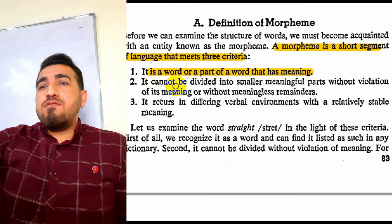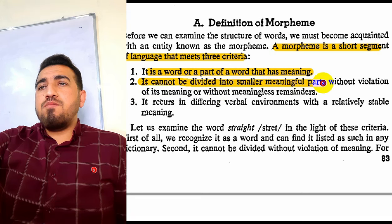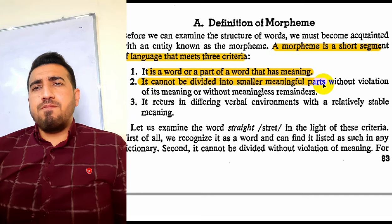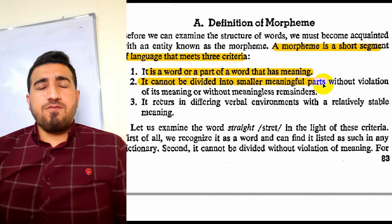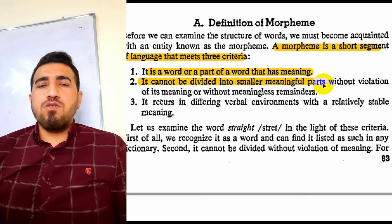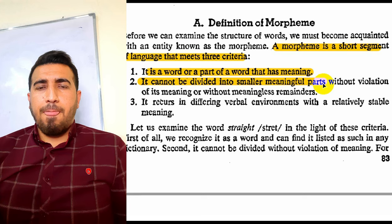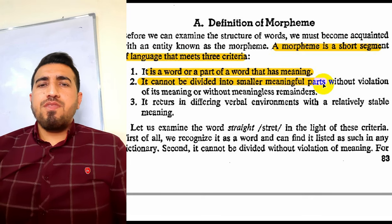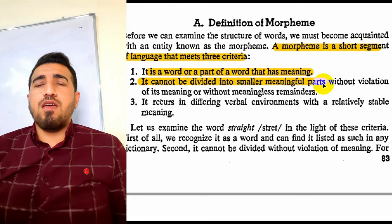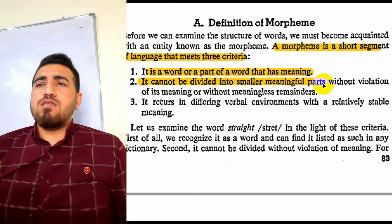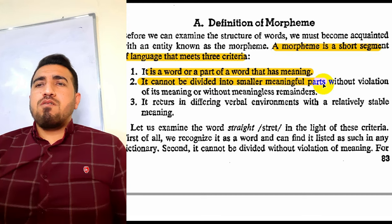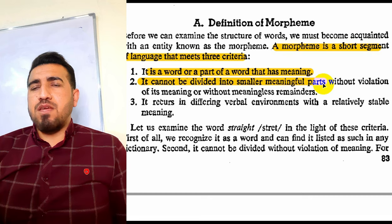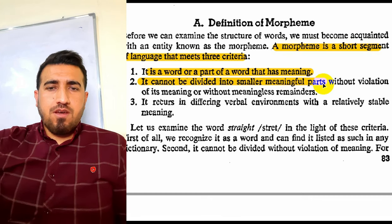The second criterion is that a morpheme cannot be divided into similar meaningful parts. This means we cannot divide a morpheme into a smaller part — if we do, the meaning will change or disappear. For example, if I have 'play' and I delete the letter 'y' or 'l', the meaning will change. So a morpheme cannot be divided. If we delete part of a morpheme, either there is no meaning or we find a completely different meaning.